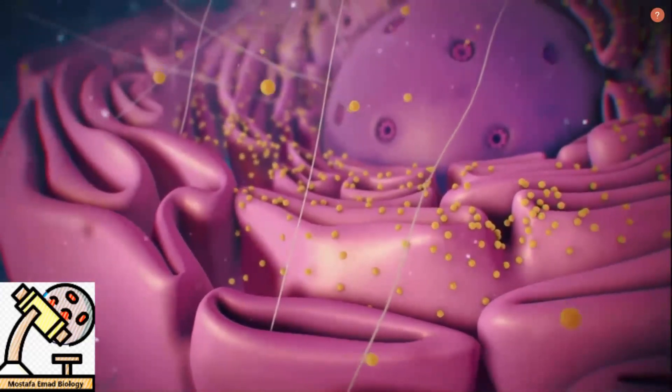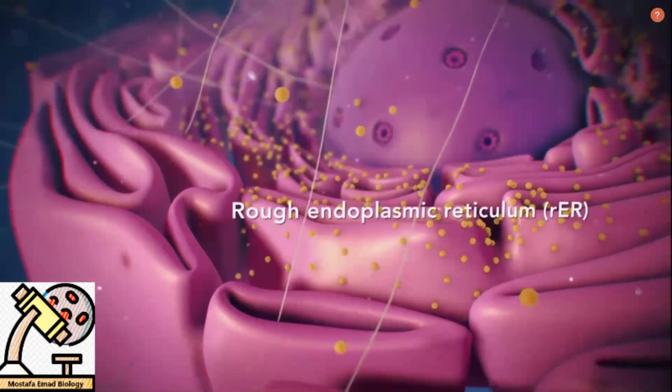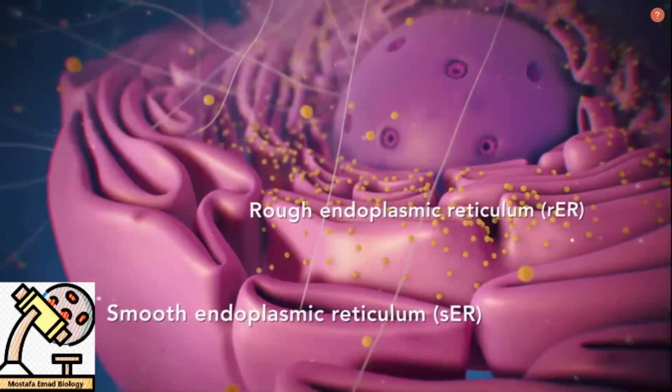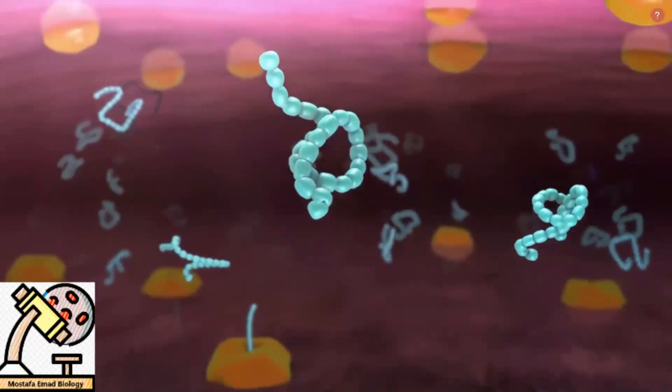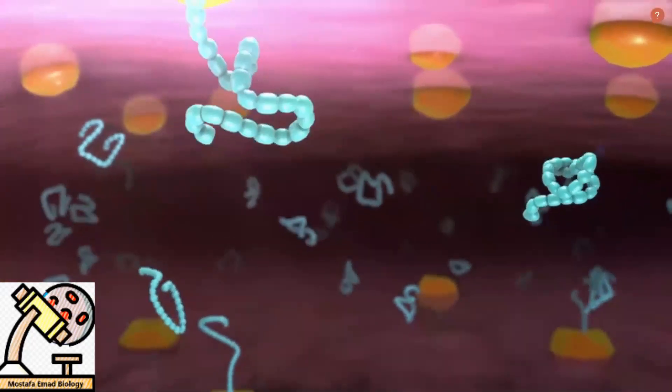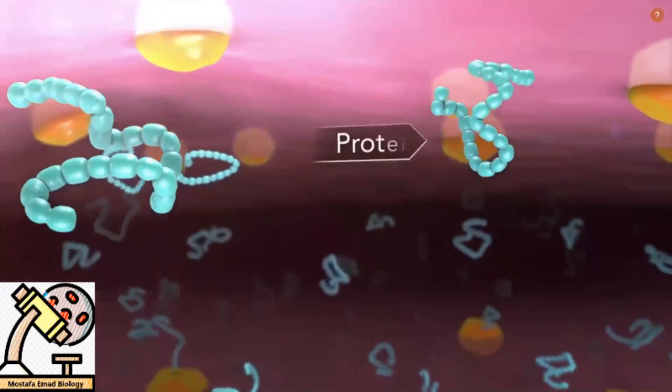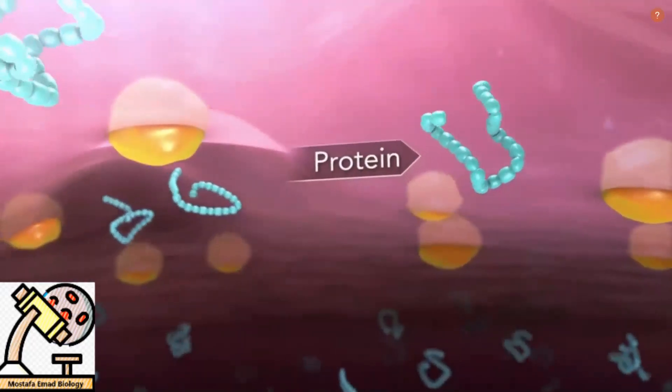There are two types of ER. Rough ER has ribosomes attached to it, and smooth ER doesn't have ribosomes attached to it. The endoplasmic reticulum is a membrane-enclosed passageway for transporting materials, such as the proteins synthesized by ribosomes.